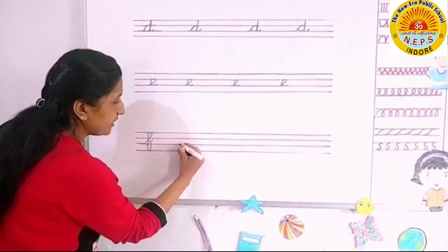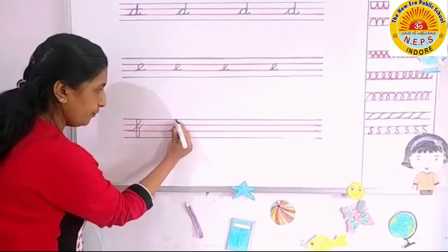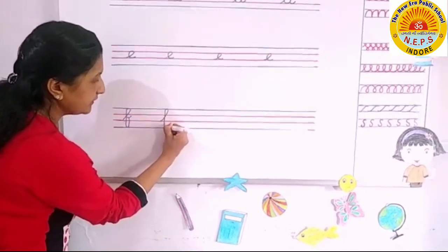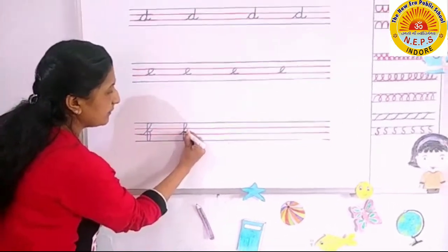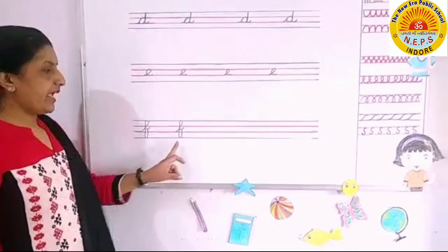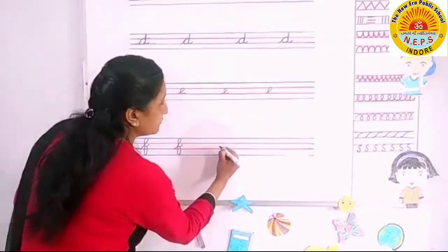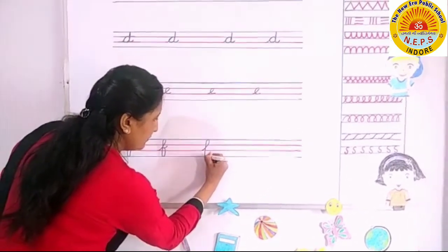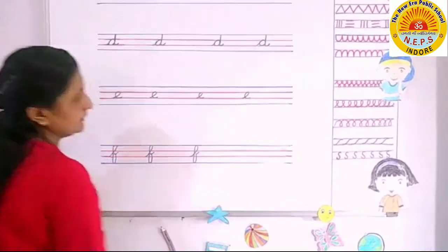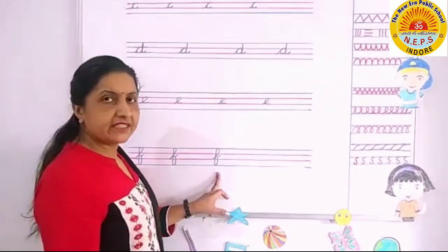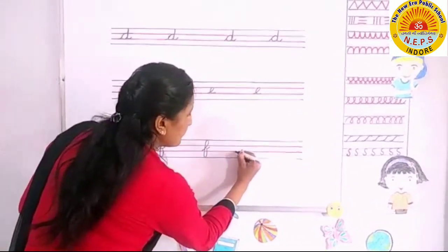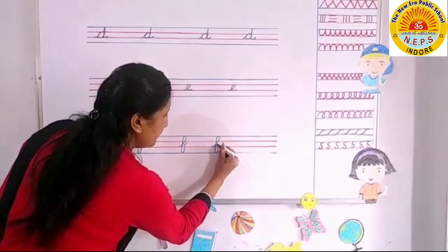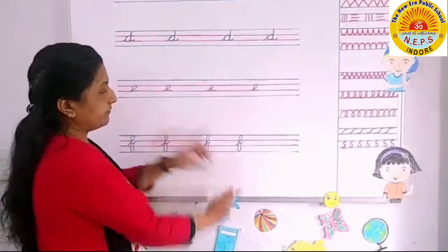Again, from the third line start. Go upwards, then come to the opposite side, bend it going downward. Make a small curve. F, F, fish. Up, down, up — F. Up, down, like this, up. Make a small curve — F.